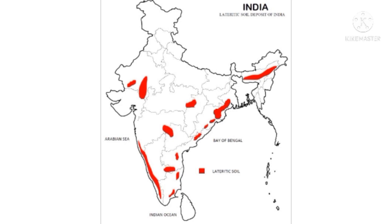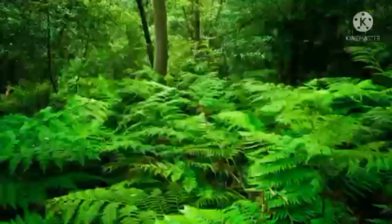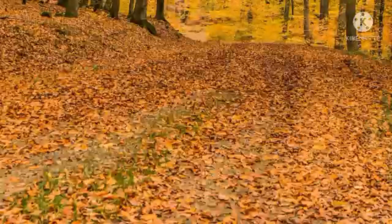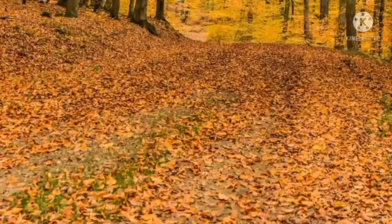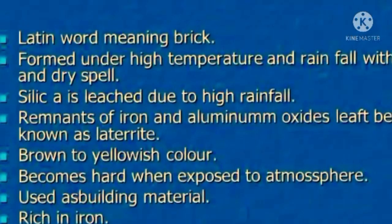Laterite soil is generally less fertile but supports some forest cover. It supports both deciduous and evergreen forests. Deciduous forests are seasonal — the trees shed their leaves — while evergreen forests remain green throughout the year. Under sparse vegetation and in semi-arid environments, laterite soil is generally humus poor.